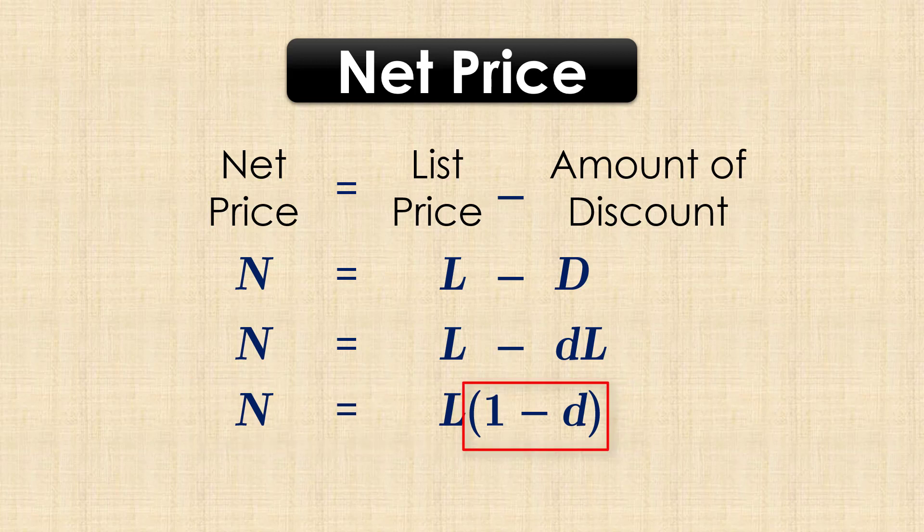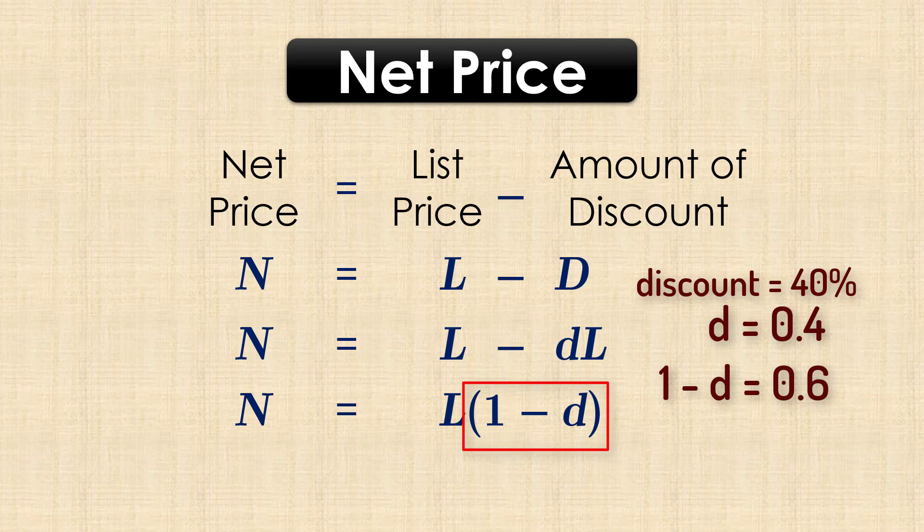1 minus D here is the rate that is actually paid. For example, if the rate of discount is 40%, D is 0.4, then 1 minus D equals 0.6.